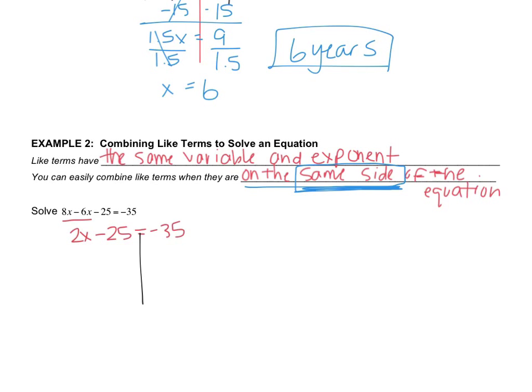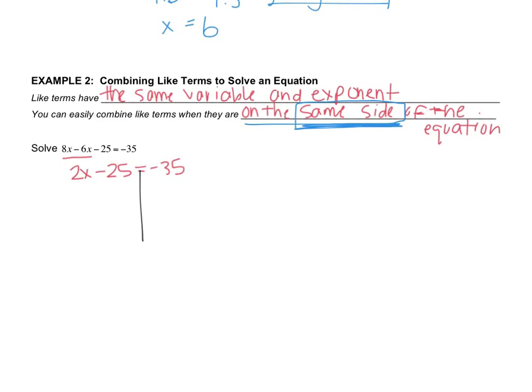Now I'll drop a line down the equal sign and solve it. So what operations do I have? I have subtraction and multiplication. Well, if we're going backwards in PEMDAS, then the first thing that I'm going to remove is the subtraction. So I will add 25 to both sides. And that cancels out the 25. So negative 35 plus 25 is negative 10. Then I still have this multiplication to remove. So let's divide by 2. And so x equals negative 5.